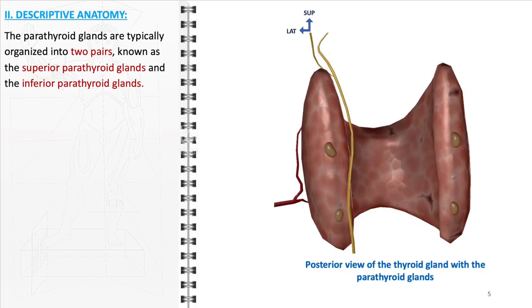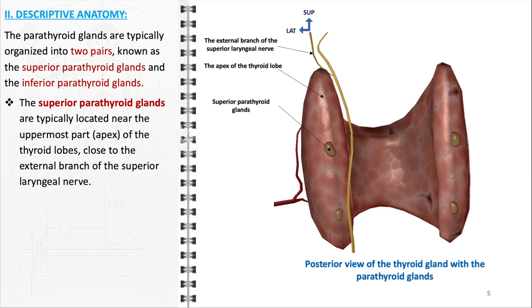The descriptive anatomy of the parathyroid glands reveals a systematic and strategic positioning within the neck region, vital for their function in endocrine regulation. These glands are generally organized into two distinct pairs: the superior and inferior parathyroid glands. The superior parathyroid glands are characteristically situated near the apex of the thyroid lobes. Their location is strategically close to the external branch of the superior laryngeal nerve, indicating a delicate interplay between the glands and the nerve structures in the neck. This positioning allows for efficient regulation of hormone secretion in close association with the neurological and vascular systems of the thyroid region.